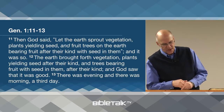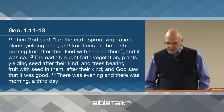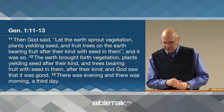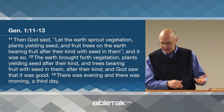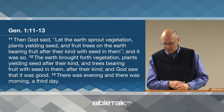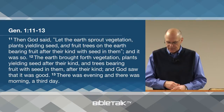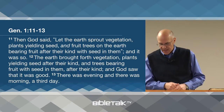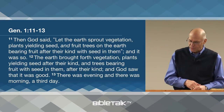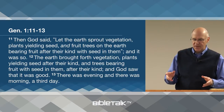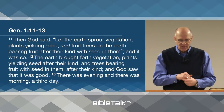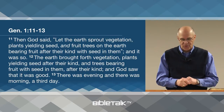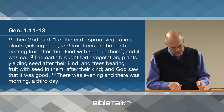So you can read Genesis chapter 1, verse 11 to 13. It says: 'Then God said, Let the earth sprout vegetation, plants yielding seed, and fruit trees on the earth bearing fruit after their kind with seed in them. And it was so. The earth brought forth vegetation, plants yielding seed after their kind, and trees bearing fruit with seed in them after their kind. And God saw that it was good. There was evening and there was morning, a third day.' So we see here there is a division of land and water, a division of light and dark, and now God begins to cover the earth with vegetation to complete the work of the third day.